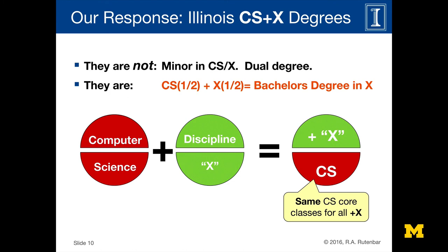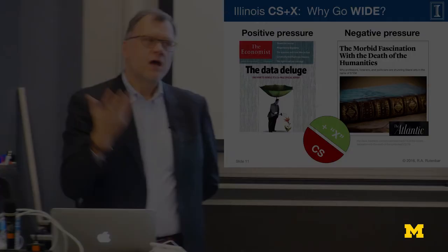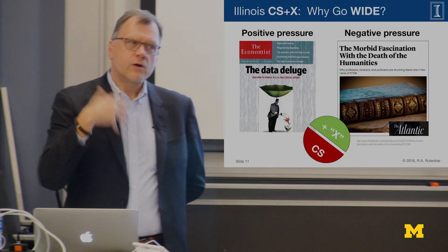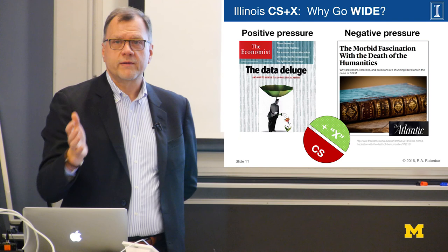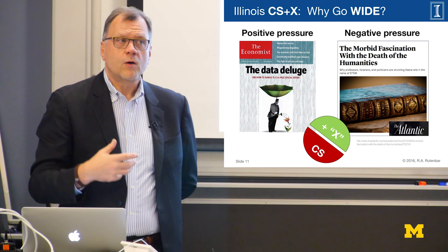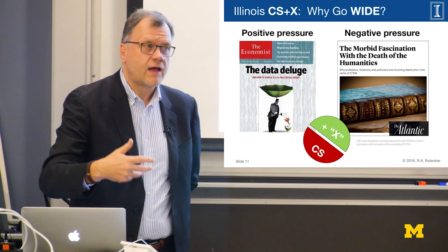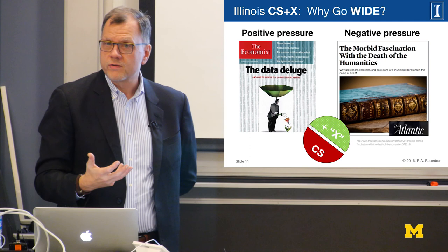Why go wide? Pick your favorite cover of any business or general publication talking about data, big data, computation — that's the positive thing. But if you go far enough across campus, you can find disciplines whose enrollment curve looks like one minus yours. The English department has half as many majors as it had a decade ago. There are people under significant duress — parental pressure asking 'why are you majoring in that, there's no universe in which you'll get a job.' So there are opportunities for lifelines — connections to departments that want into the computational universe but aren't sure how.